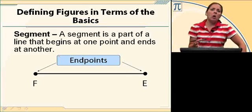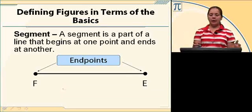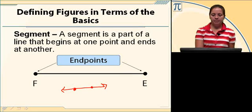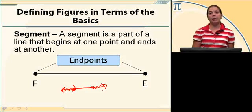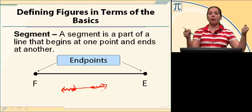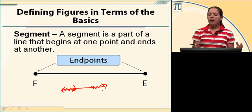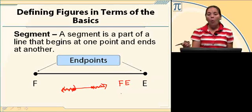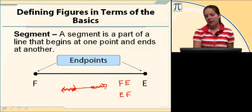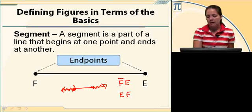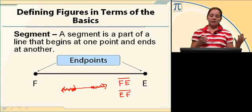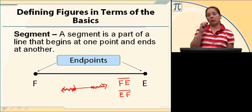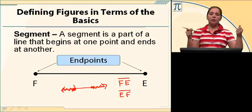A segment is a part of a line with two endpoints. You take the line and chop it so that you only have a portion of it with two endpoints — it's not going to go forever in both directions. When you name it, you name it with the endpoints. I've got endpoints F and E — I name it FE or EF, and you put a segment bar over the top with no arrows. You can write out the word segment FE or segment EF, or use the symbol notation — a single bar over the top, no arrows, because those are the endpoints of the segment. It stops.